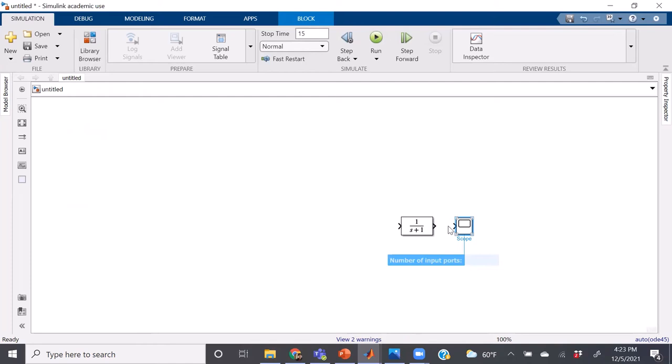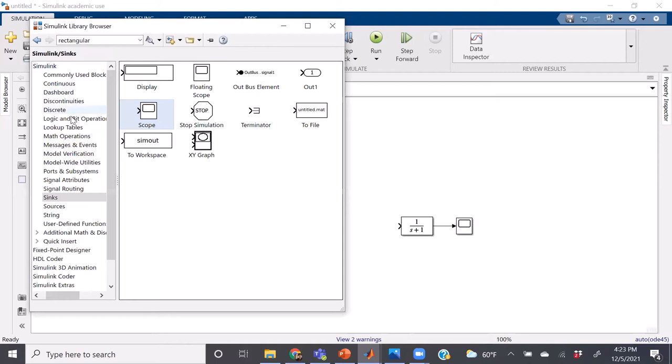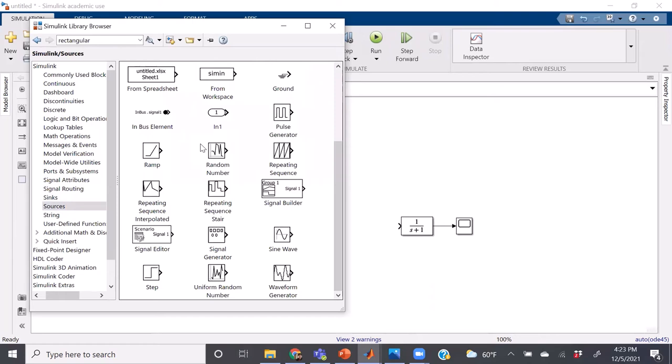So connecting those two, now all we have left is our input. If we go back to library browser and go to sources, we will find blocks for a wide variety of different types of inputs.